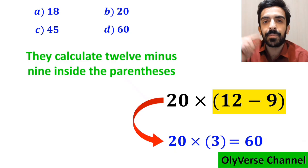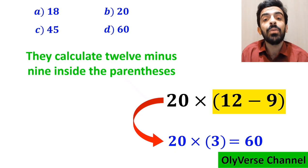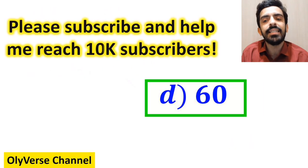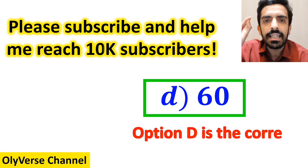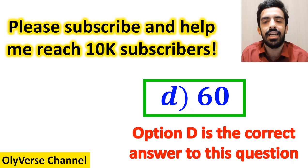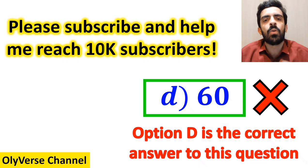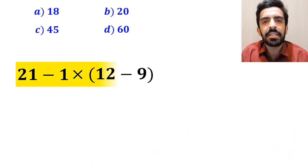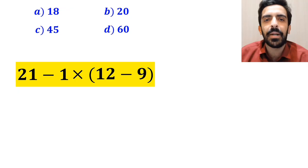And finally, the value of this expression must be equal to 60. Then, without any hesitation, they quickly say that option D is the correct answer to this question. However, this answer is absolutely wrong.